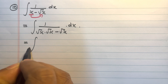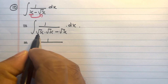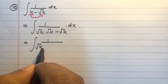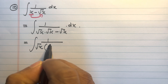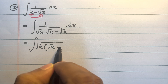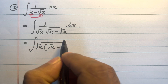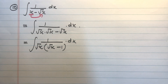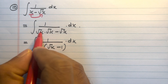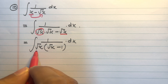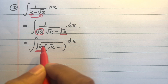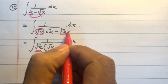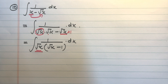That is equal to integral of 1 divided by root x into (root x minus 1) into dx, where root x is common and taken outside.